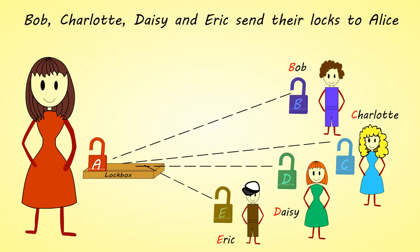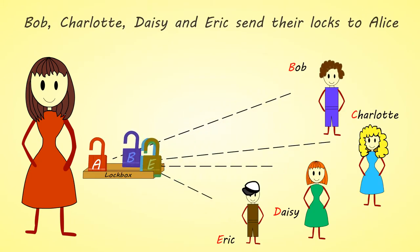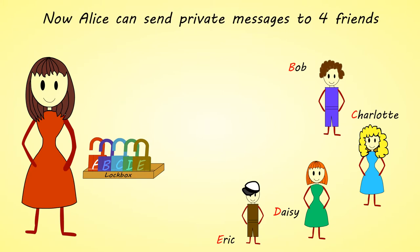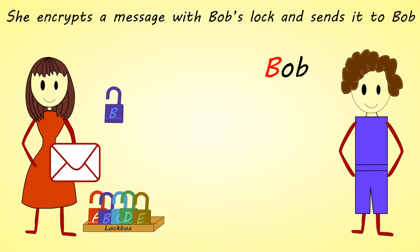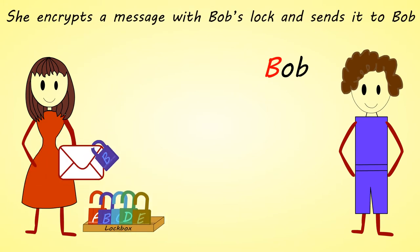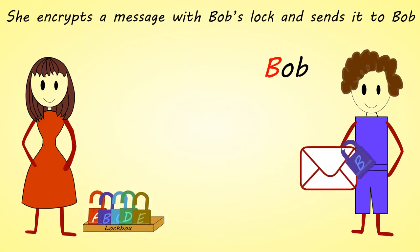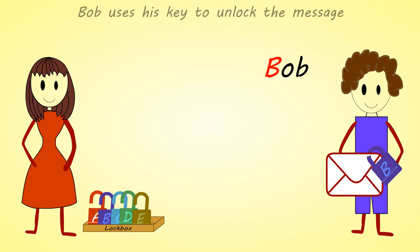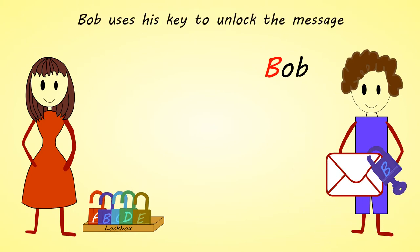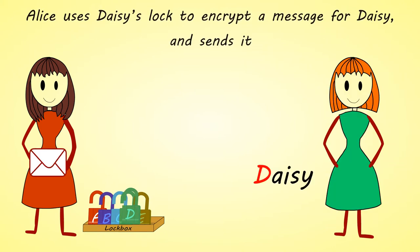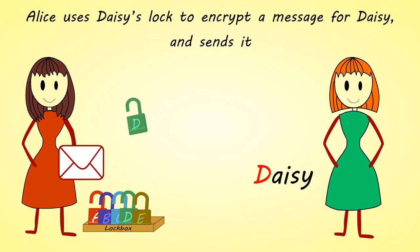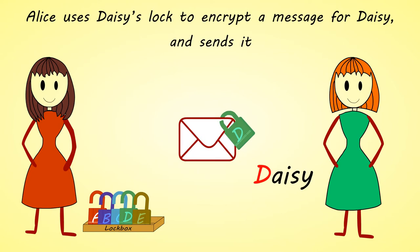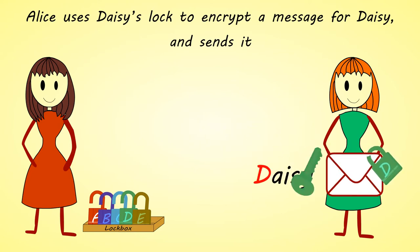Bob, Charlotte, Daisy, and Eric send their locks to Alice. Now Alice can send private messages to four friends. She encrypts a message with Bob's lock and sends it to Bob. Bob uses his key to unlock the message. Alice uses Daisy's lock to encrypt a message for Daisy and sends it.